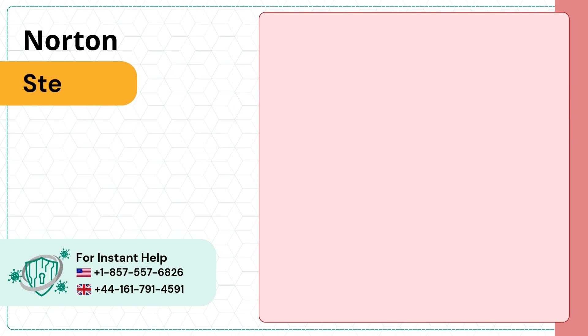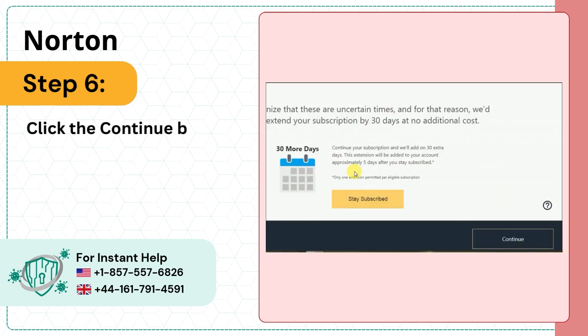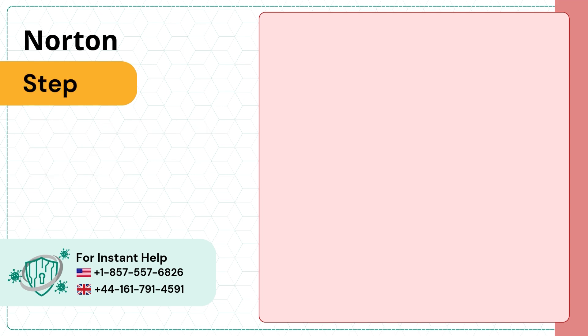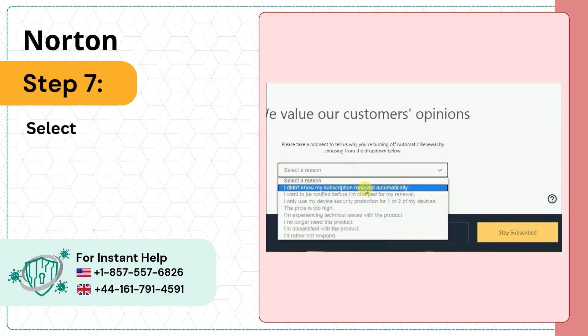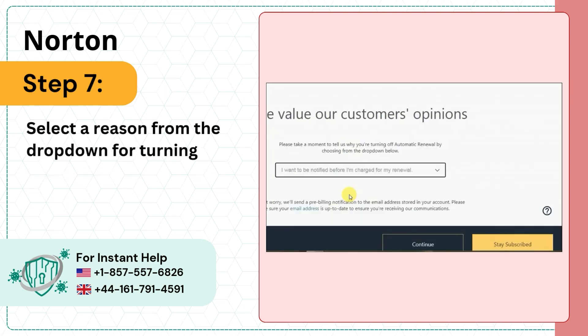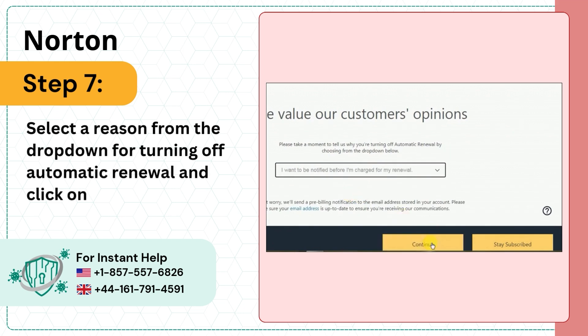Step 6: Click the Continue button to turn off the subscription. Step 7: Select a reason from the drop-down for turning off Automatic Renewal and click on Continue again.